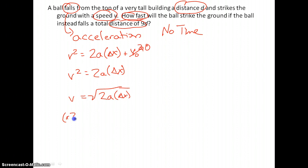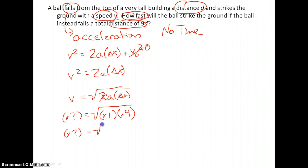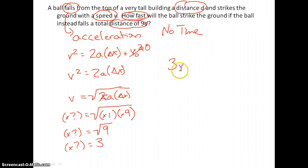Now we do our multiplier effects. We don't care about the coefficient. The multiplying effect on a is times one — it's staying constant. The distance is changing by a factor of nine, so 9d. The multiplying effect on v is the square root of nine, and the square root of nine is three. So we're looking at a multiplying effect of three — three times the original velocity. The answer is 3v. If they'd told us the original speed, we could compute the exact number, but this is where we stop: the answer is 3v.